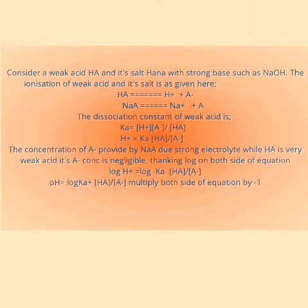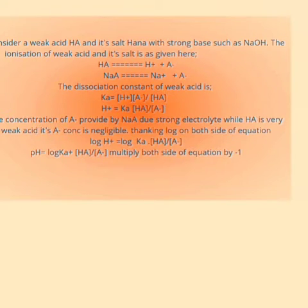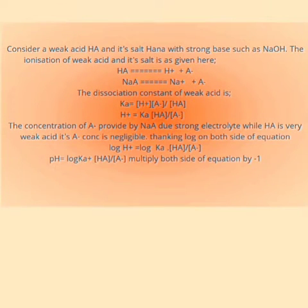Consider a weak acid, capital HA — H for proton, A for acid — and its salt NaA, the sodium salt, which is a very strong electrolyte. The ionization of the weak acid gives hydrogen ion and A⁻ ion. Similarly, the strong electrolyte sodium salt NaA ionizes into sodium ion and A⁻ ion.